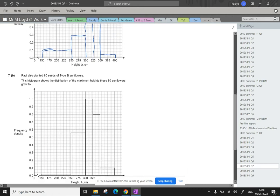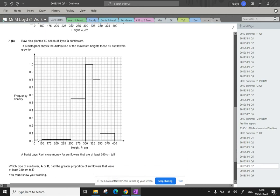Okay, Ravi has also planted 80 seeds of type B. Which type of sunflower, A or B, had the greater proportion of flowers that were at least 340 centimeters tall?